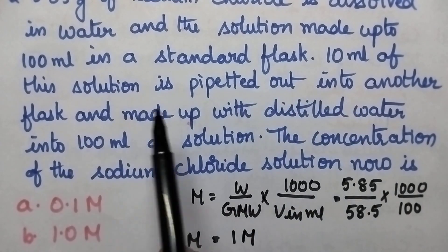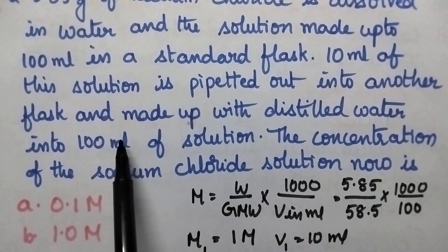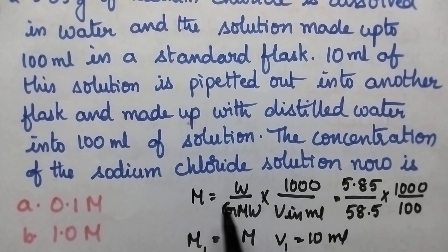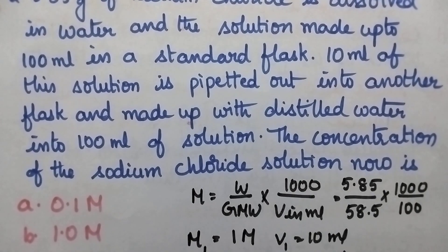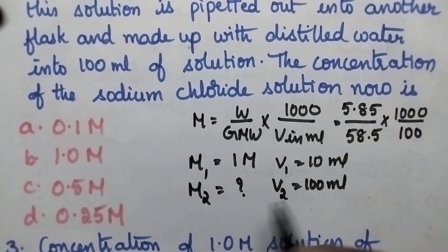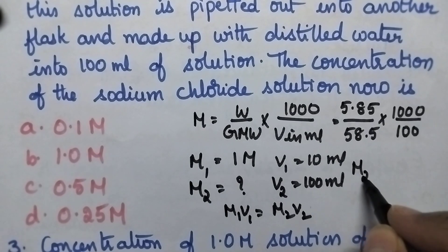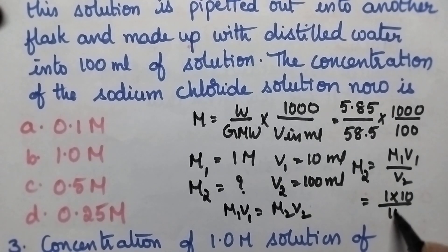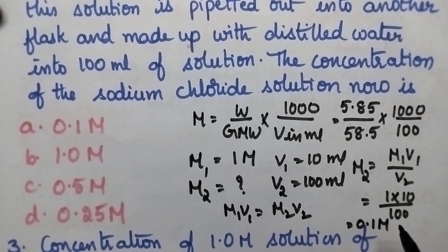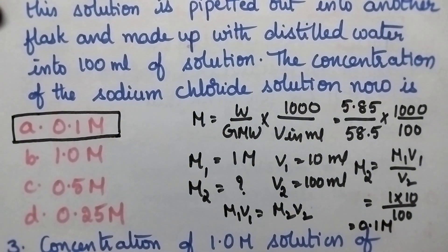In the second stage, 10 ml of this 1 molar solution is pipetted out into another flask and made up to 100 ml with distilled water. The solution is diluted, and we use the dilution formula M1V1 = M2V2. So M2 = M1V1 / V2 = (1 × 10) / 100 = 0.1 molar. Option A is the right answer.